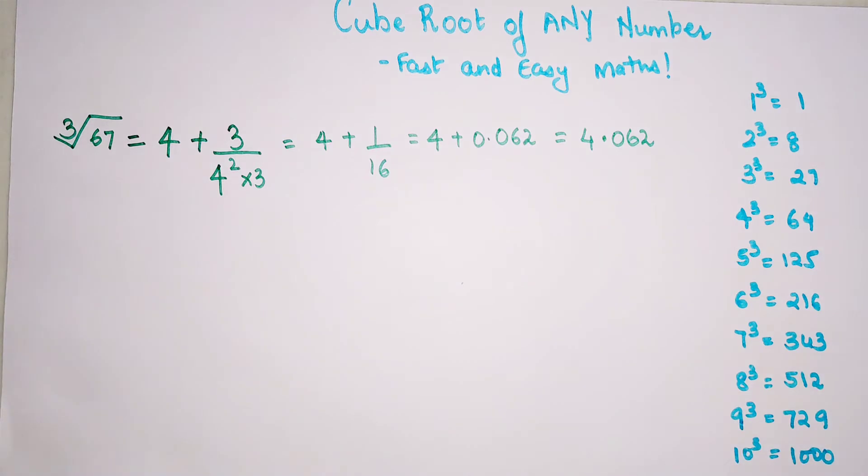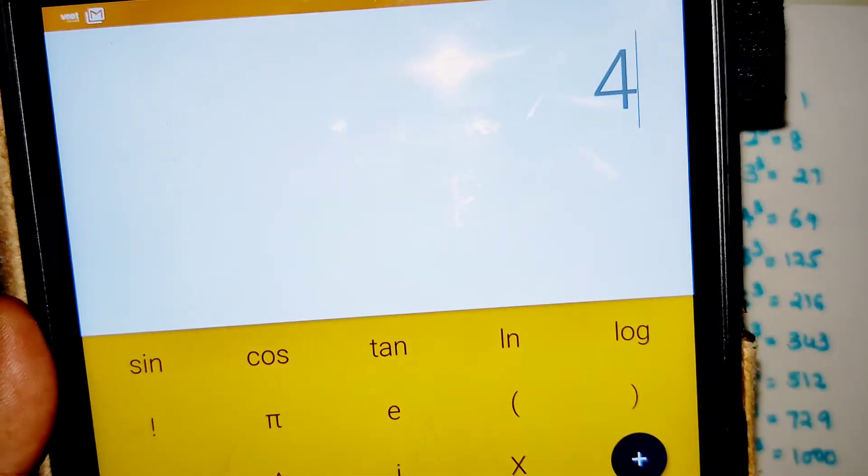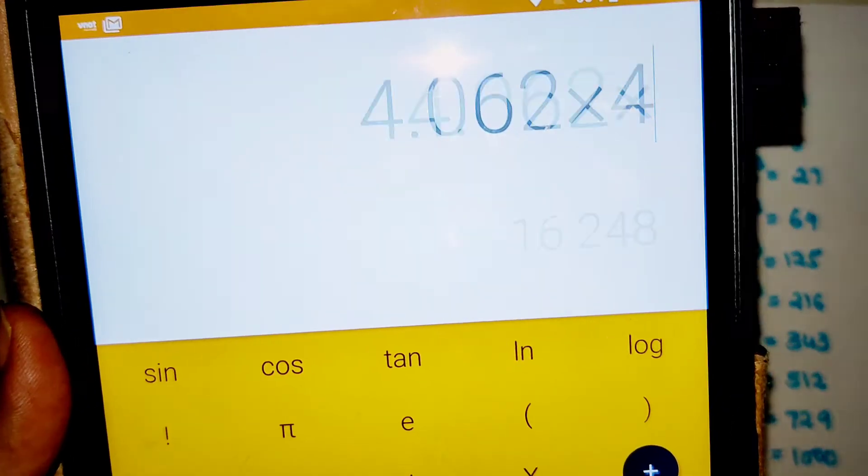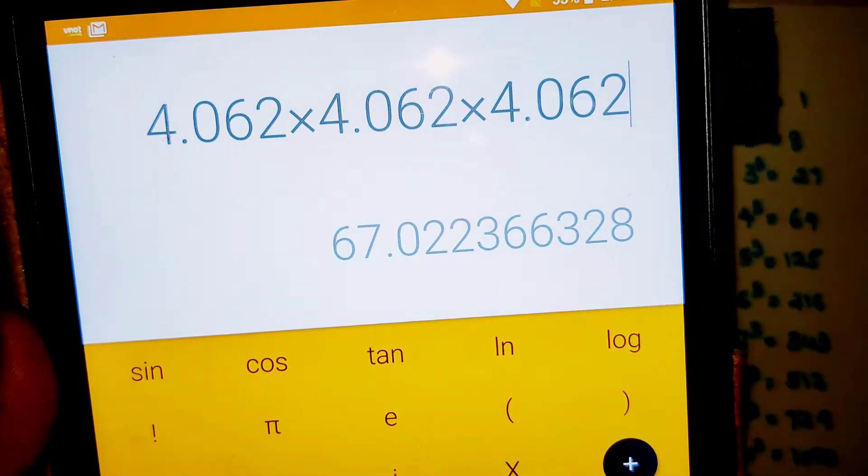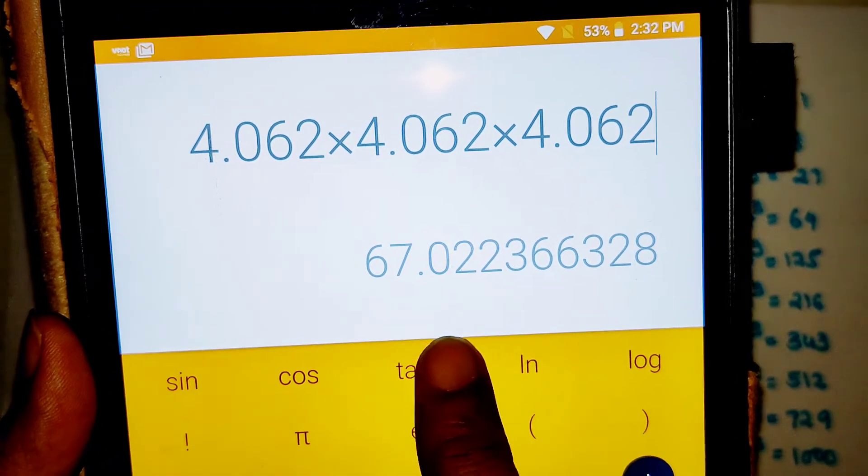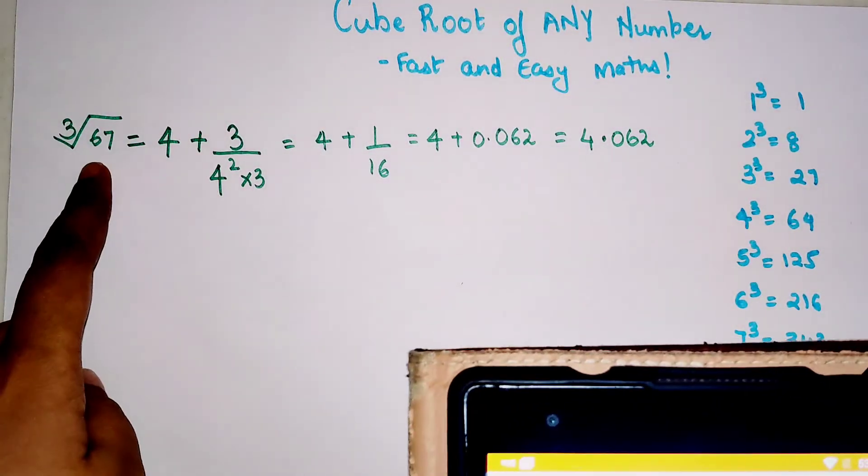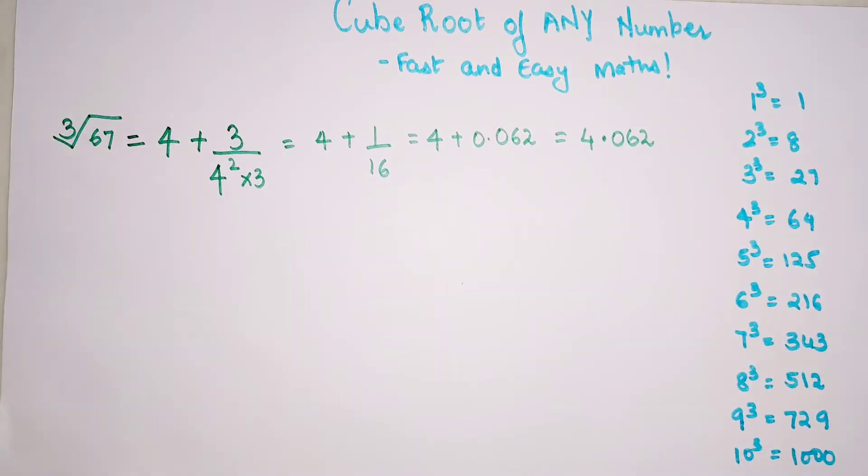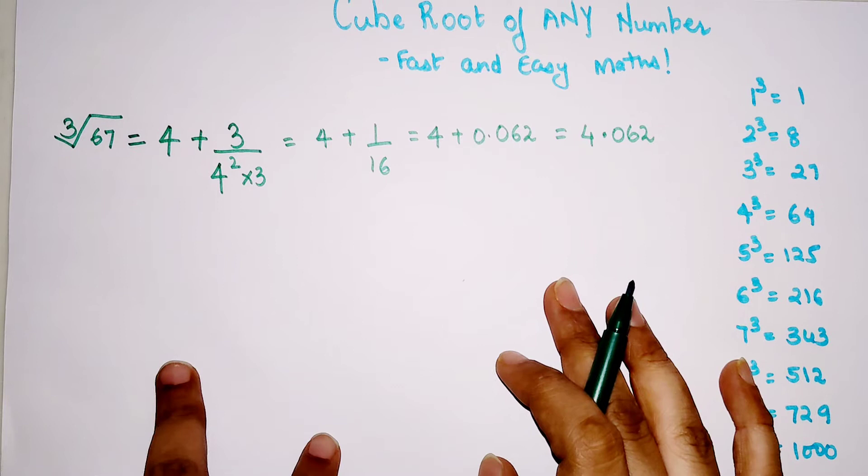This is the answer for the cube root of 67. If you want, we can use a calculator and check. 4.062 multiplied three times gives us an answer which is very, very close to our original question. So I hope you've gotten the point and the logic behind doing this trick.